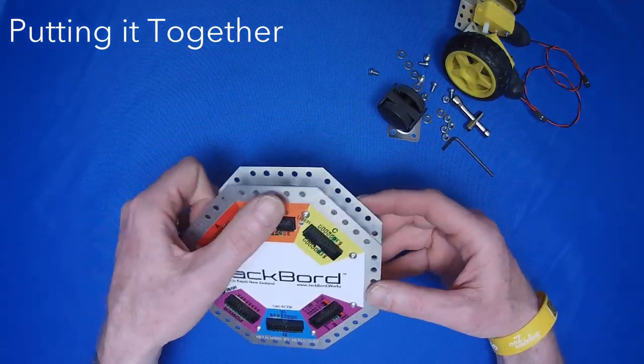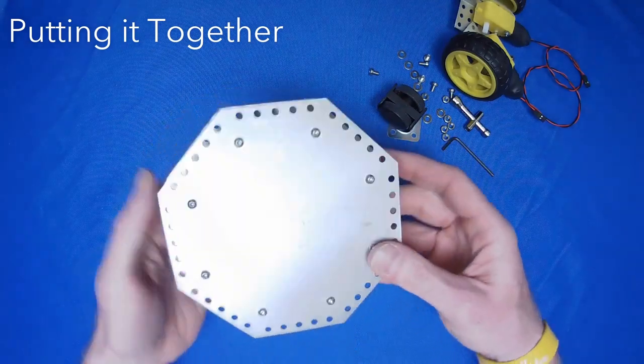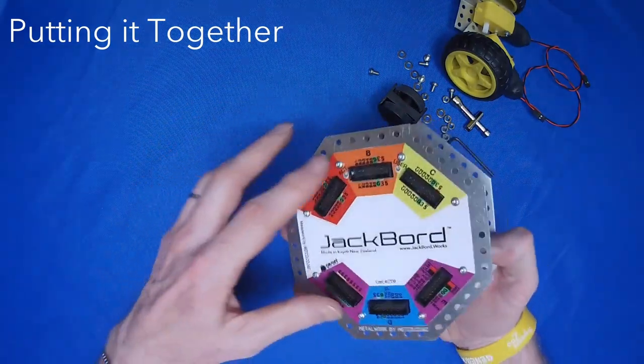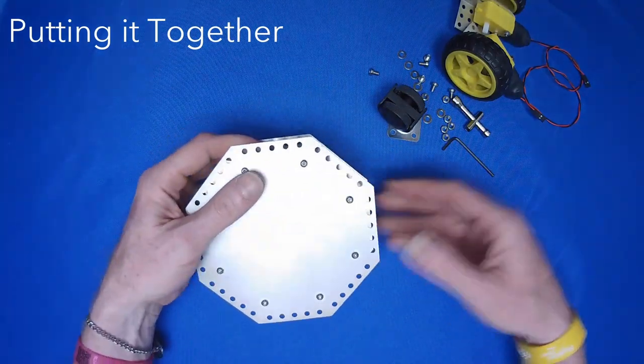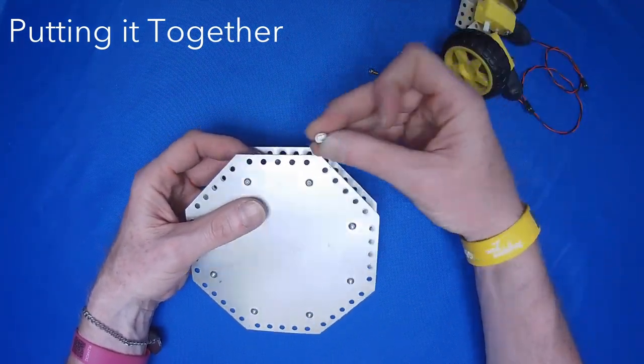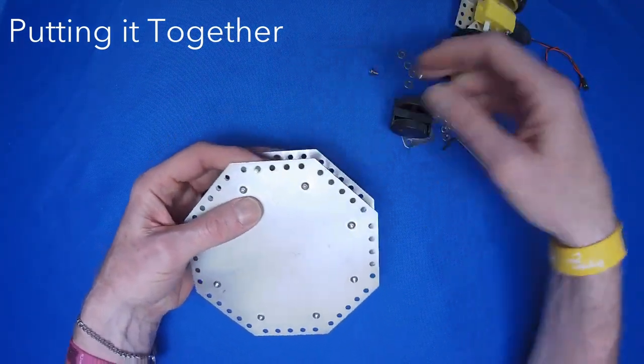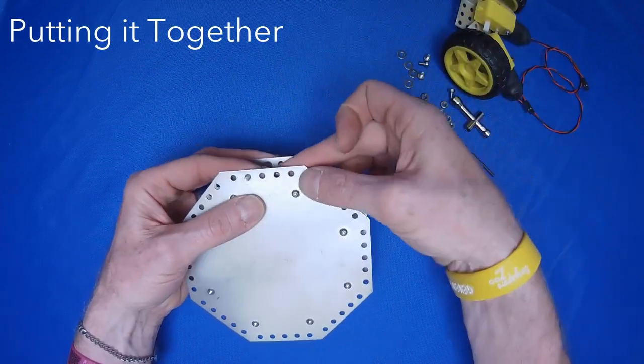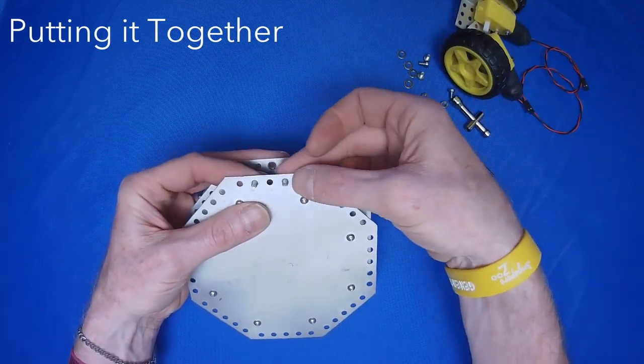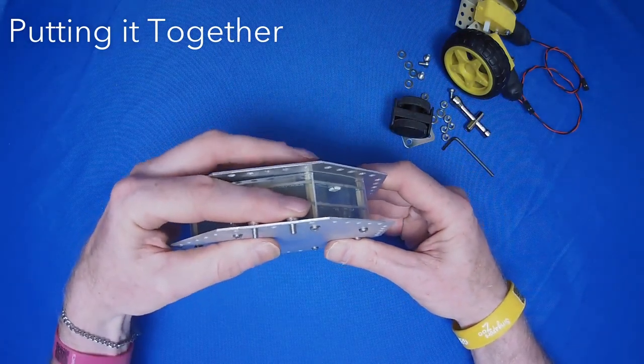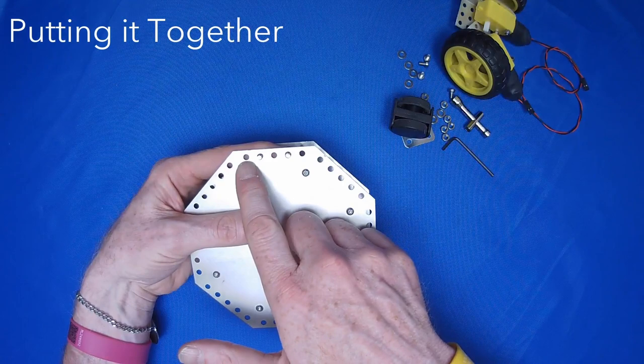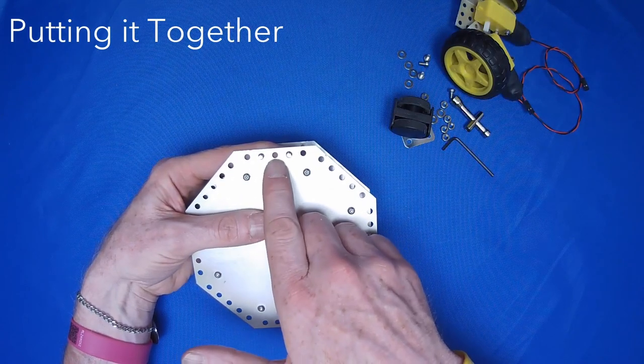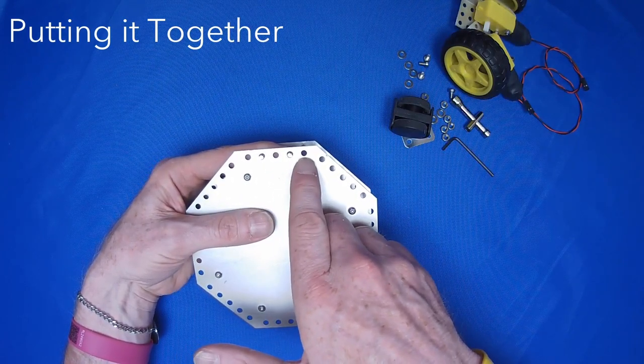We'll basically put the front trolley wheel on first. So what you do is you flip the JackBoard over with port B at the top, so facing that way. And then we're going to take two M4 bolts and put them in these two holes here. And then use your finger to hold them in so they don't fall out. And we know it's correct because you've got one empty hole there, a bolt, empty hole, bolt and another empty hole.